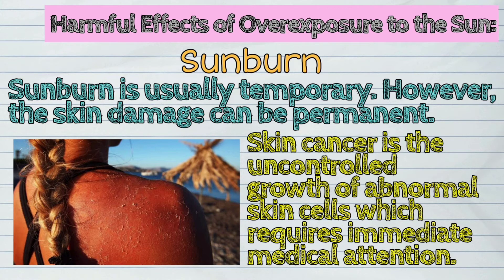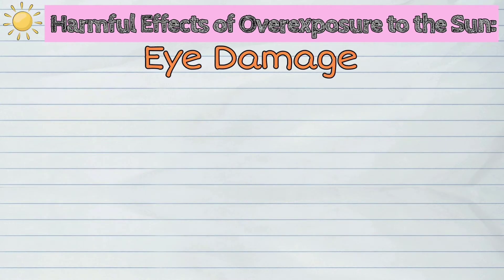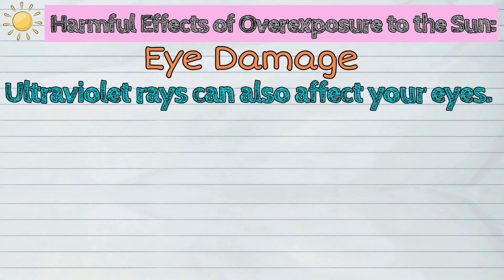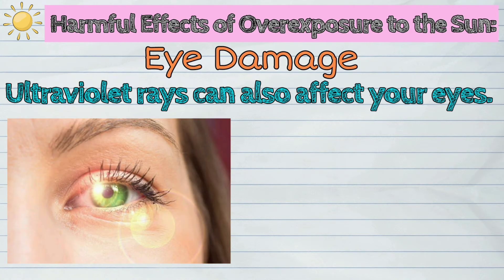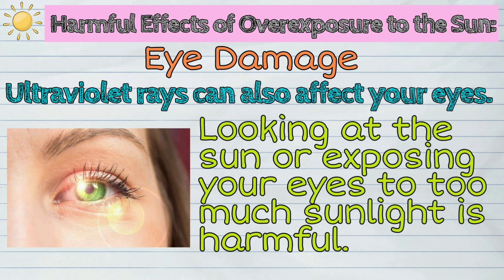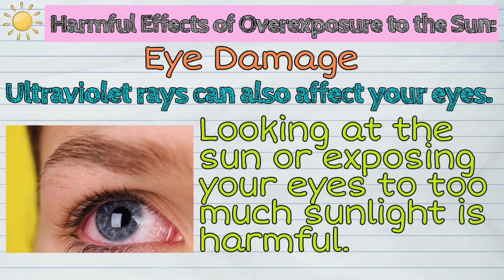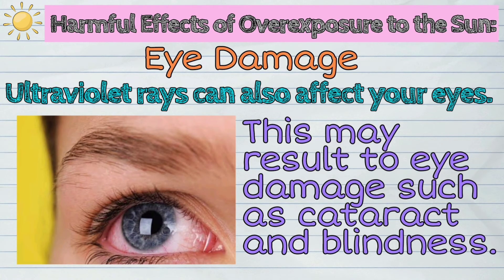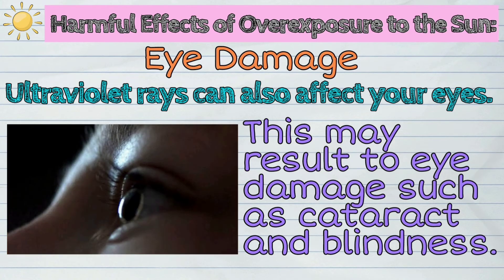Second, eye damage. Ultraviolet rays can also affect your eyes. Looking at the sun or exposing your eyes to too much sunlight is harmful. This may result in eye damage such as cataract and blindness.